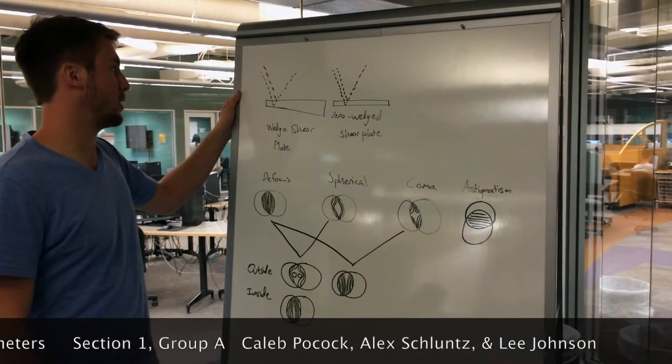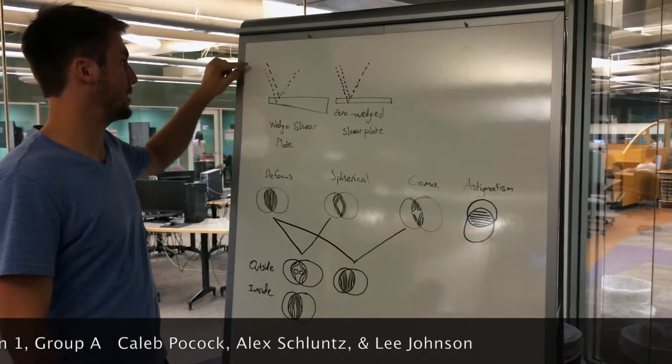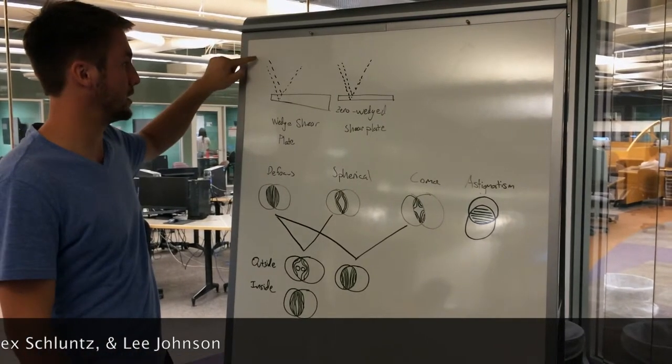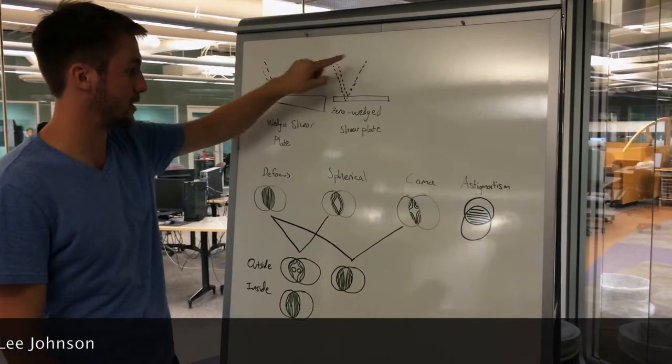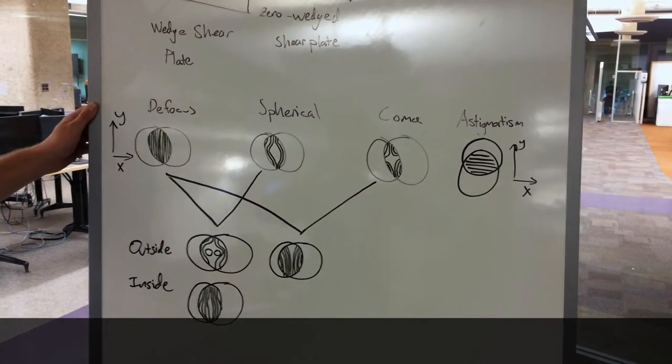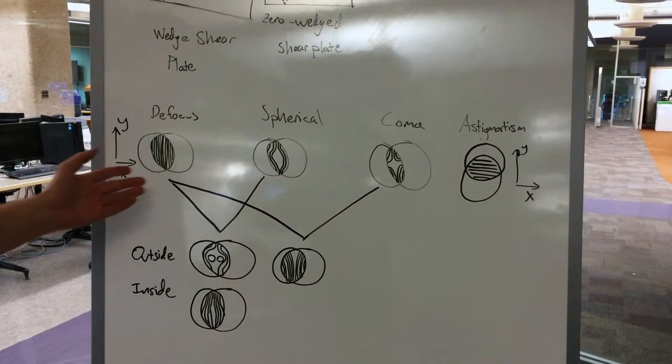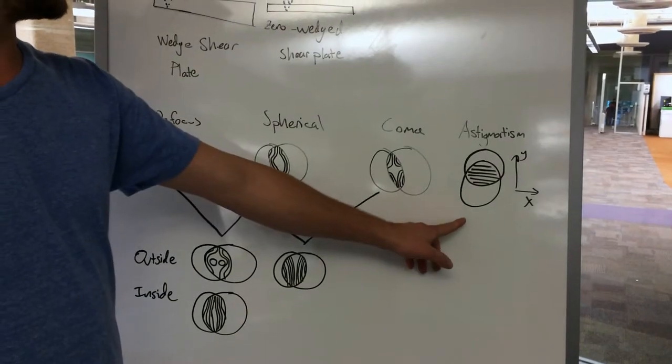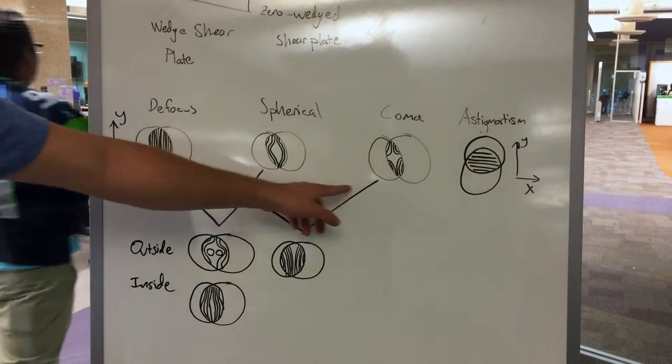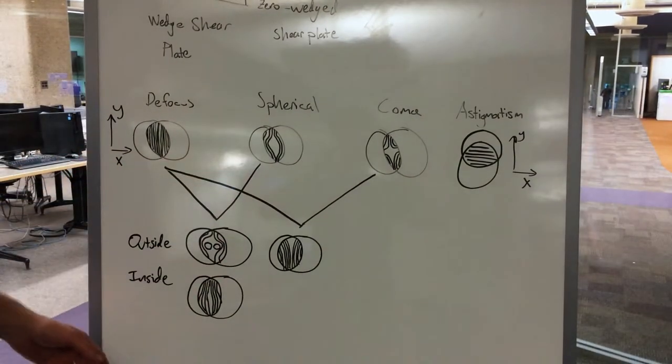Both of these interferometers work on the optical path difference of the different rays traveling, depending on if they're hitting the first surface and reflecting or the second surface and reflecting. When we look at different aberrations with the zero wedge shear plate, we see very distinct patterns. With astigmatism, the fringes are in a different orientation because the shear separation is different.